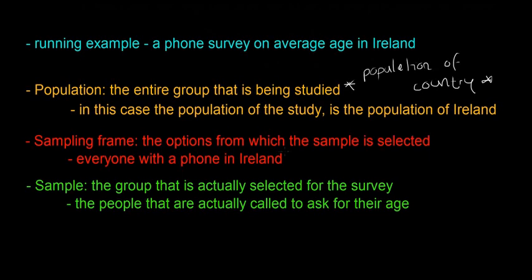The next term is the sampling frame. The sampling frame is the options from which the sample is selected — in this case, it's everyone with a phone in Ireland, because you can't do a phone survey with anyone who doesn't have a phone. And then the last term is the actual sample itself: the group that is actually selected for the survey — the people you actually call and ask for their age.